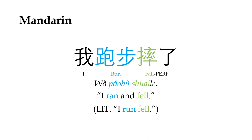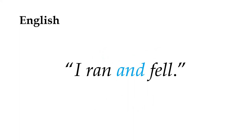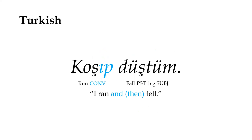Some languages, like Mandarin, are perfectly happy to simply place the two verbs in apposition, while others, like English, demand a conjunction or some other connecting element. But another fairly common strategy found in many of the world's languages is to use a converb construction.